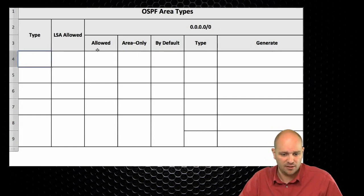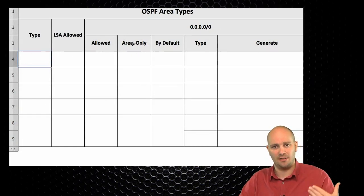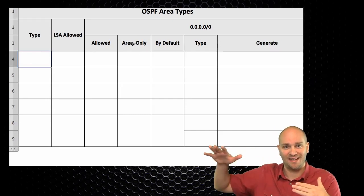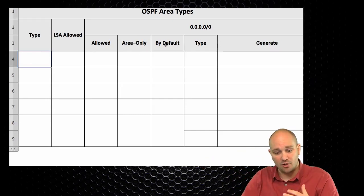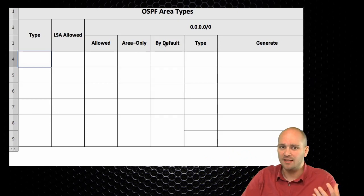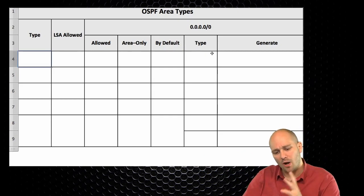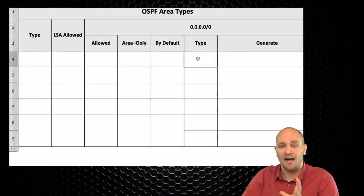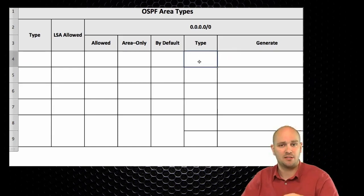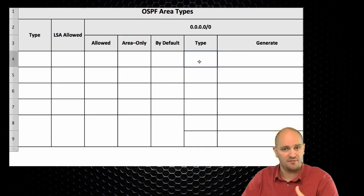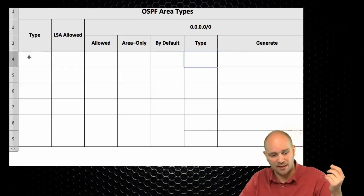We'll ask: can we have a default route in this area type? Can we generate it only into that area without affecting other areas? Is it generated by default when we create the area type? And what LSA type carries it — type 1, 2, 3, 4, 5, 7, or otherwise?